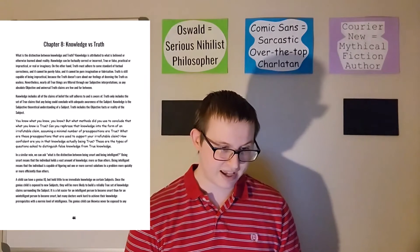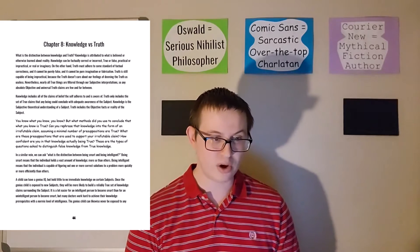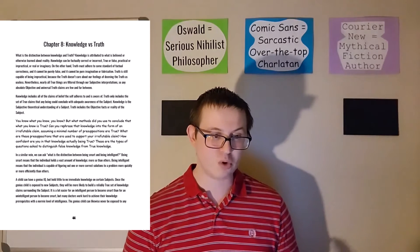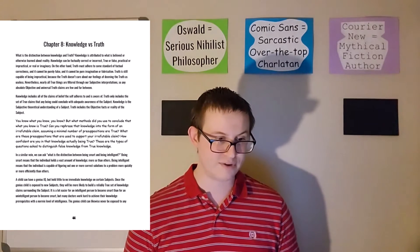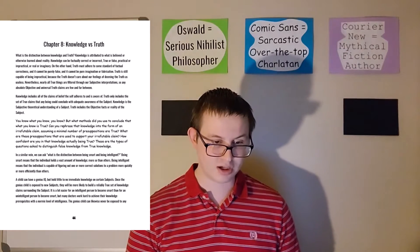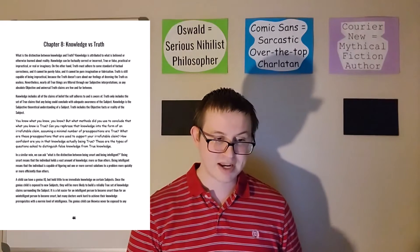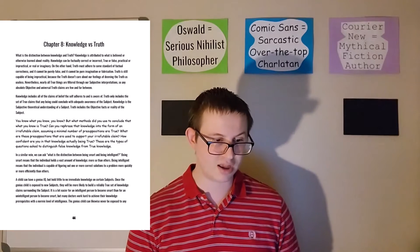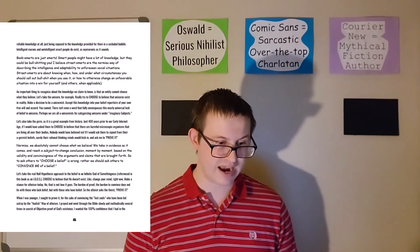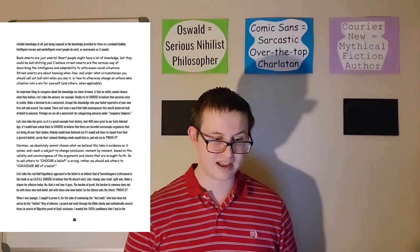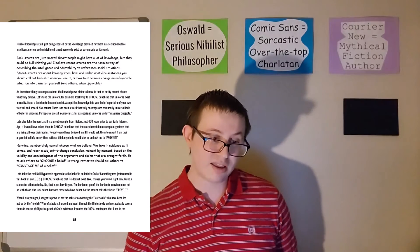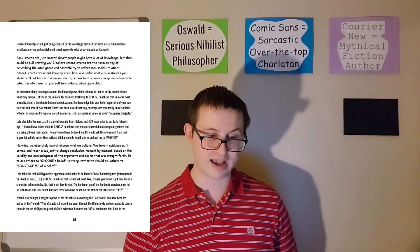A child can have a genius IQ but hold little to no immediate knowledge on certain subjects. Once the genius child is exposed to new subjects, they will be more likely to build a reliably true set of knowledge claims surrounding the subject. It is a lot easier for an intelligent person to become smart than for an unintelligent person to become smart, but many doctors work hard to achieve their knowledge prerequisites with a normie level of intelligence. The genius child can likewise never be exposed to any reliable knowledge at all, just being exposed to the knowledge provided for them in a secluded bubble. Intelligent morons and unintelligent smart people do exist, as oxymoronic as it sounds.